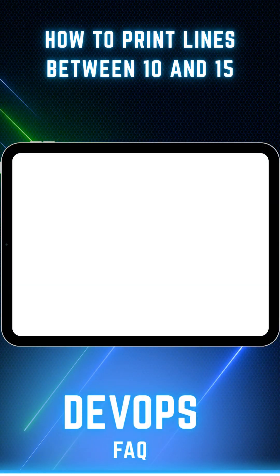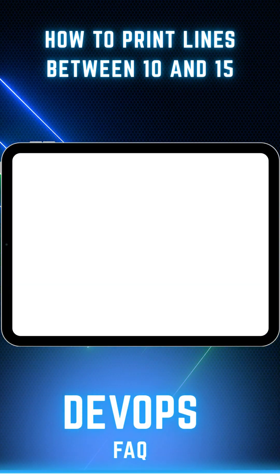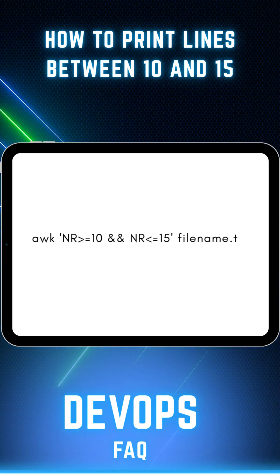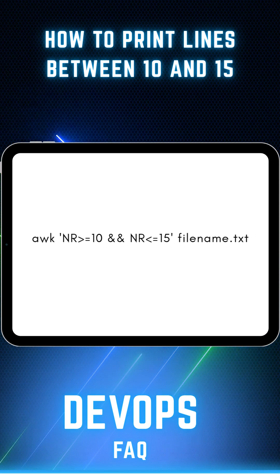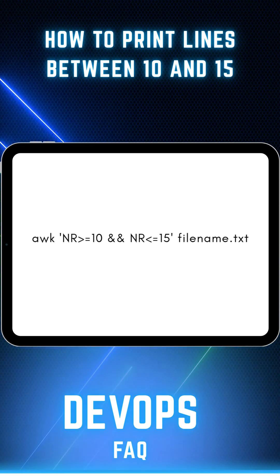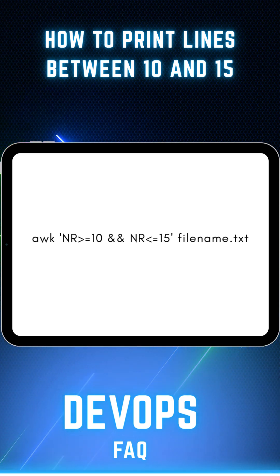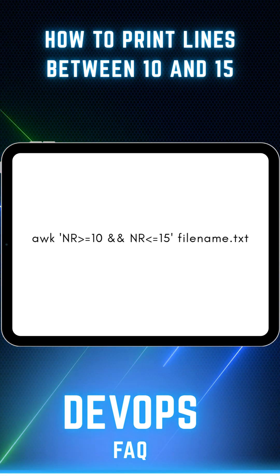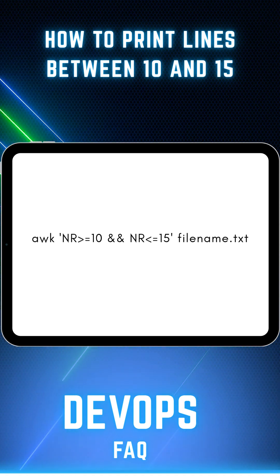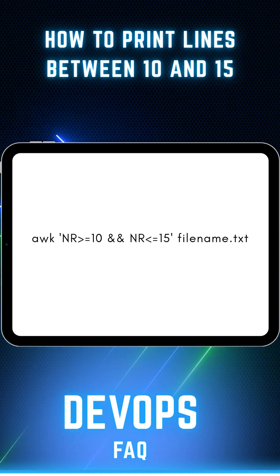The first one is using the awk command: awk 'NR>=10 && NR<=15' filename.txt. This will print lines between 10 and 15.